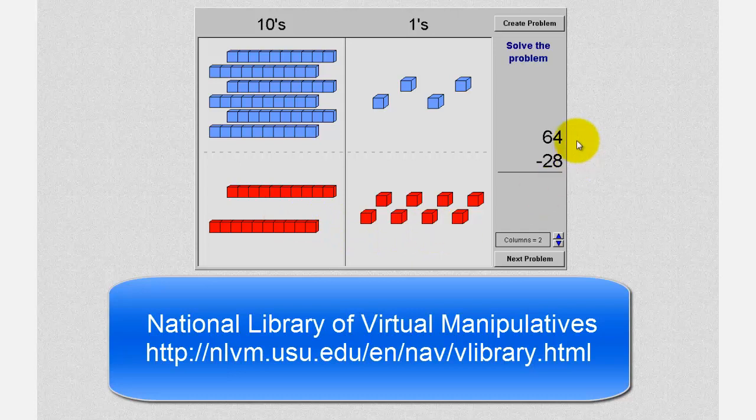So to start, we want to subtract the 1's place value, but notice how we can't subtract 8 from 4, or we can't take away 8 blocks from 4 blocks, which means we'll have to perform an exchange using the six 10 blocks here. We'll take one 10 block and move it over to the 1's place value, which will give us a total of 14 1 blocks in the 1's place value.